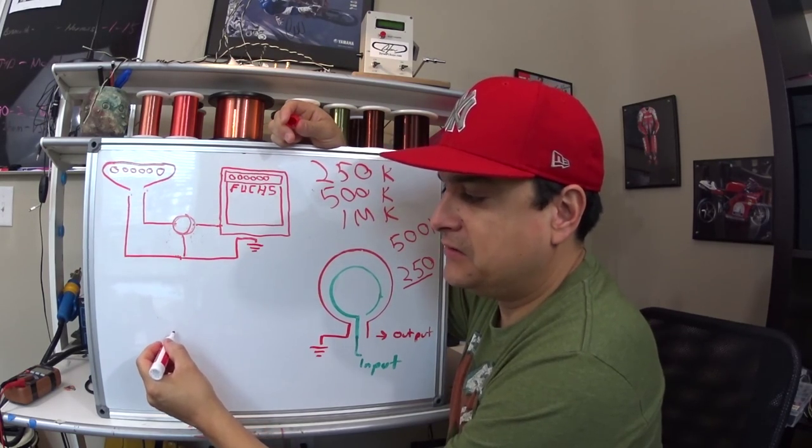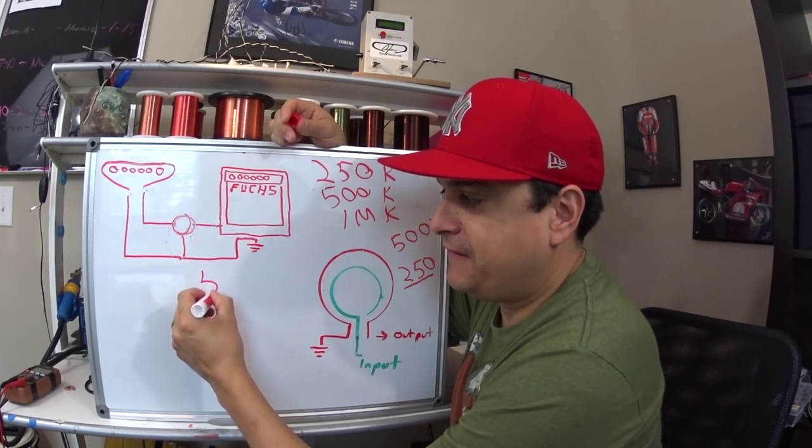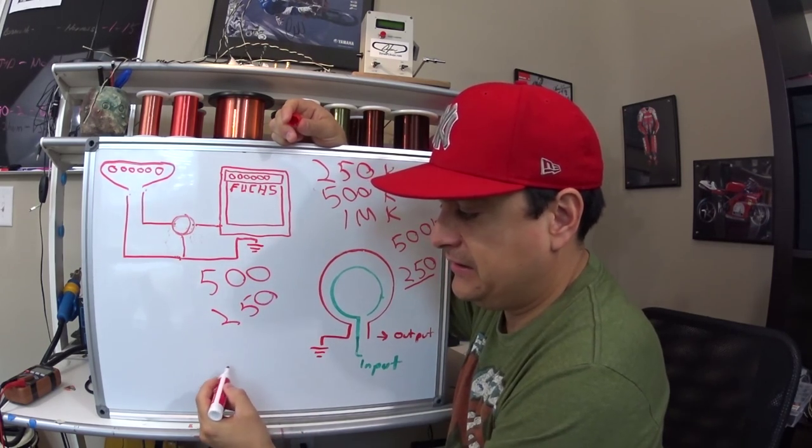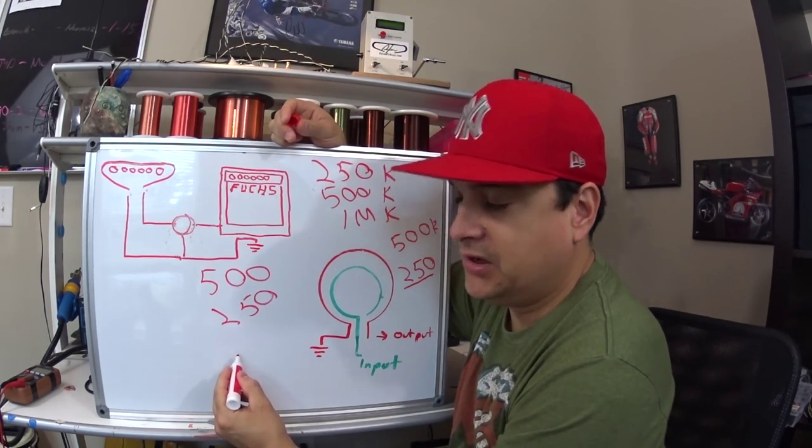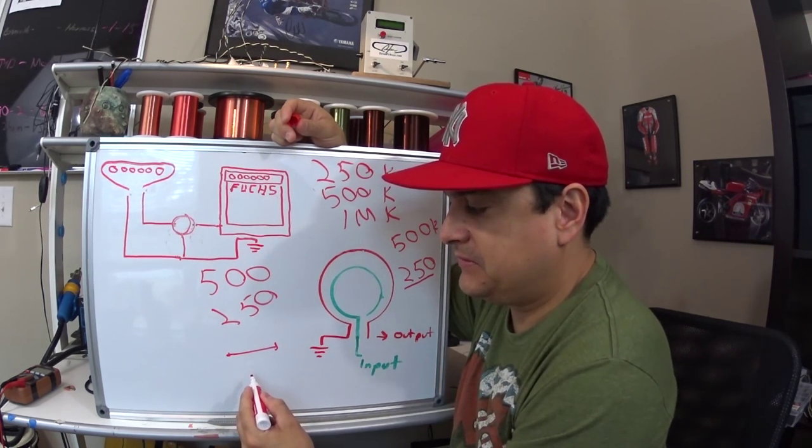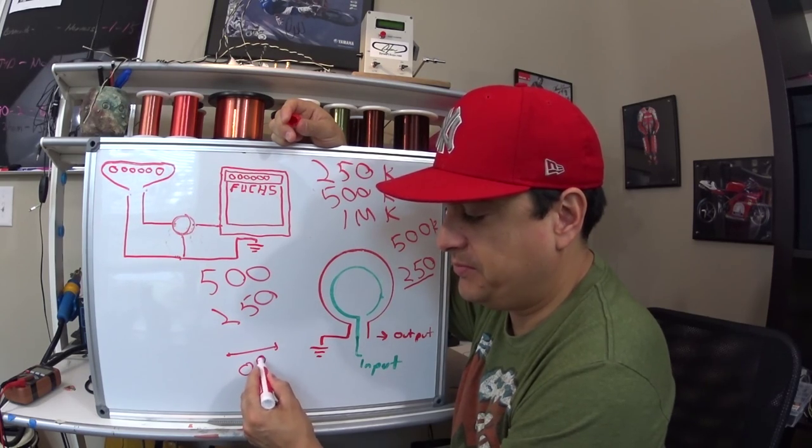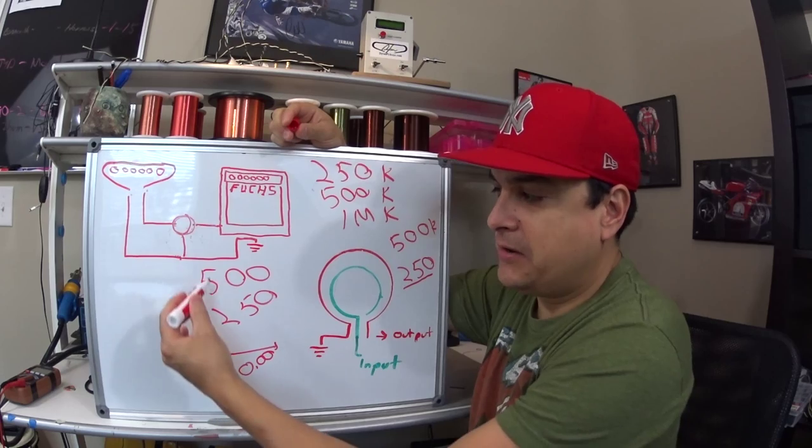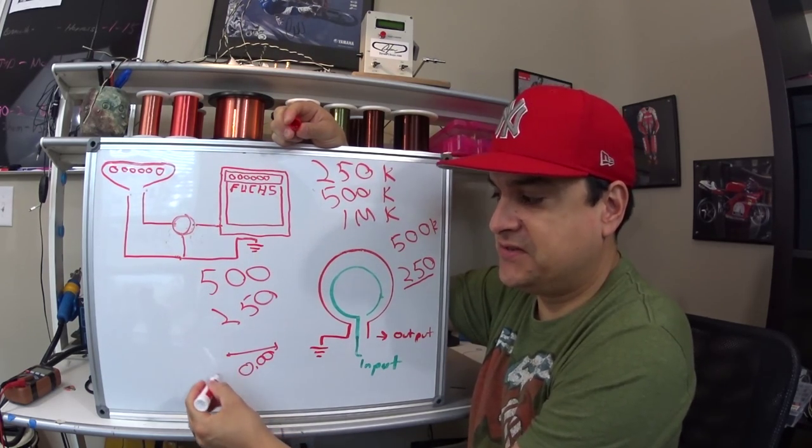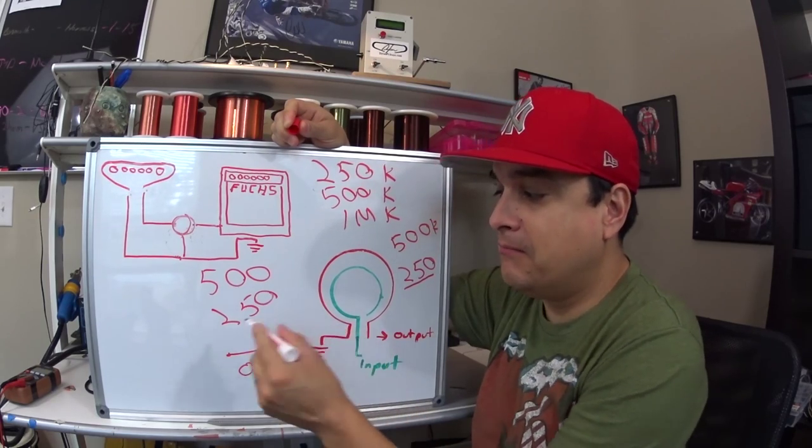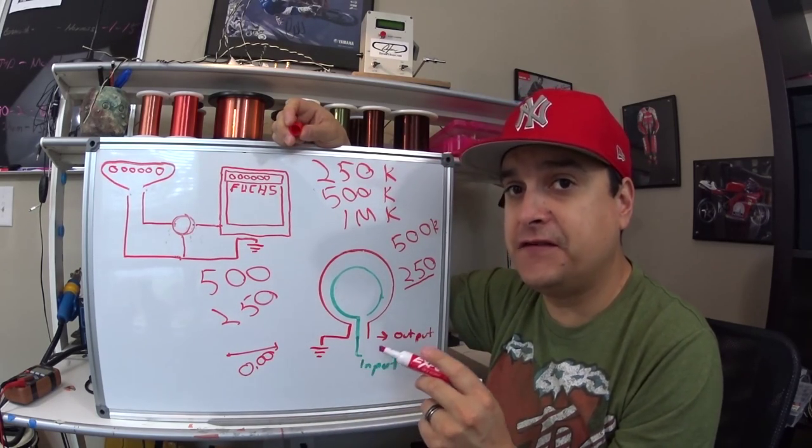So, just remember that, that the lower number, so we have 500, we have 250, and let's say we have a nail, that is zero because it's a short. If you just put a piece of metal across something, it's a short. The lower the number, the faster the resistance to ground. The faster the resistance to ground, the more high frequencies are going to get filtered off.